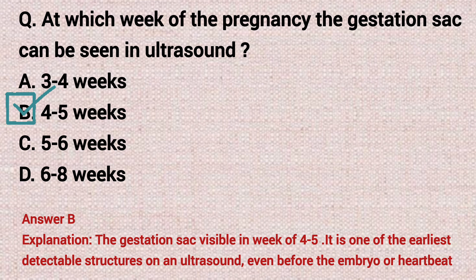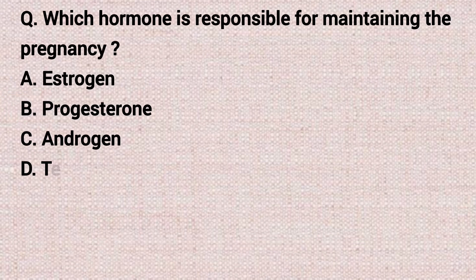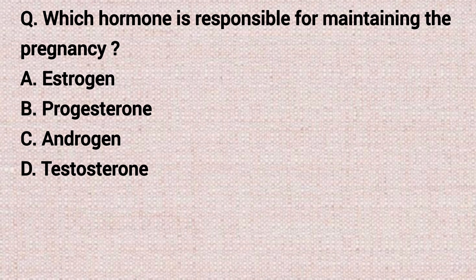The next question: which hormone is responsible for maintaining the pregnancy? Option A: estrogen. Option B: progesterone. Option C: androgen. Option D: testosterone. The correct answer is option B, progesterone.